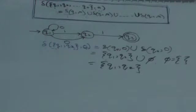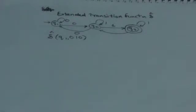This rule is used to evaluate the extended transition function. The extended transition function is used to evaluate the transition for a string of input symbols, whereas the simple transition function gives the transition for a single input symbol. The extended transition function gives the output for a string that may have one or more input symbols.